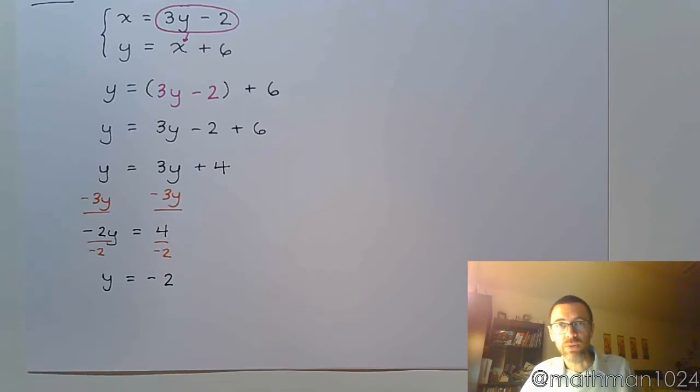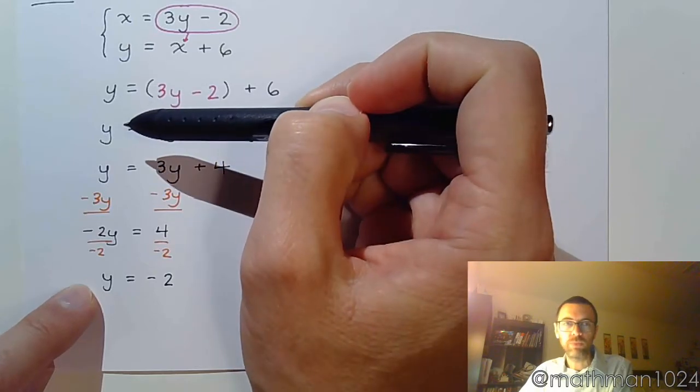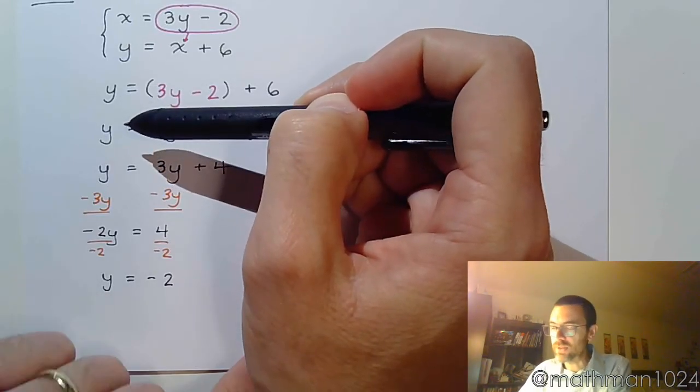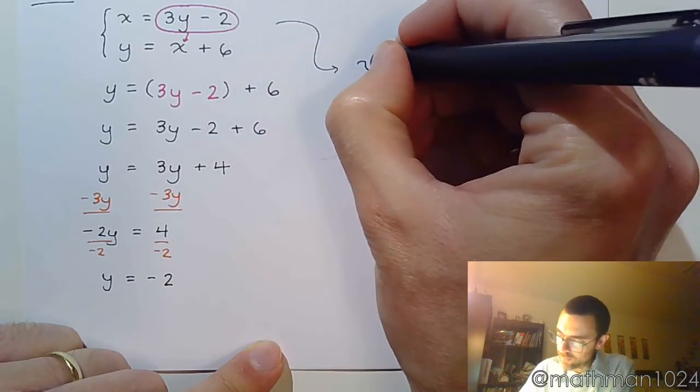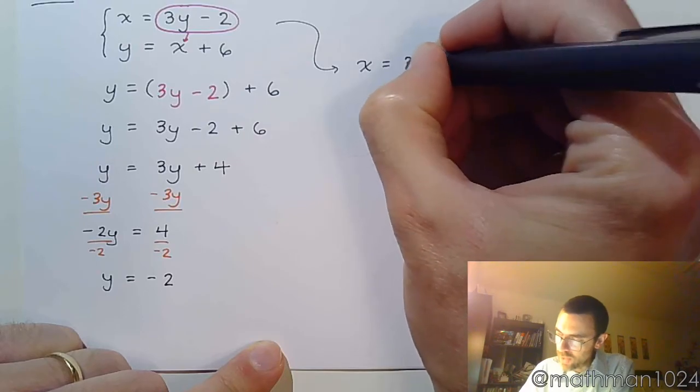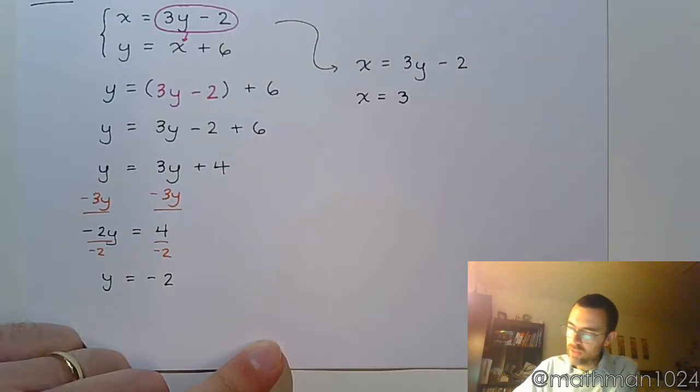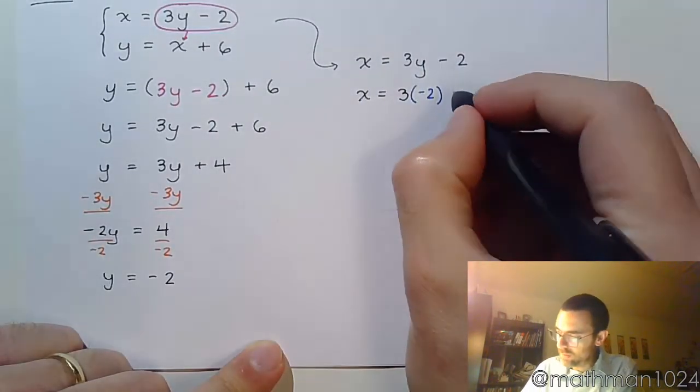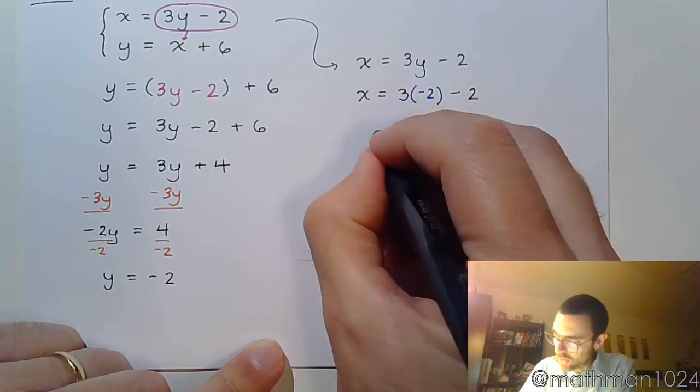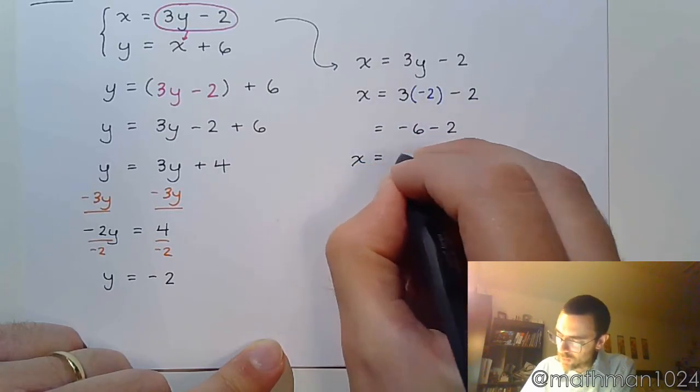Now that I know what Y equals, I just have to plug that into one of the original equations. Now, be smart about this. I could plug Y equals negative 2 in here. That's going to be a bit more work, because I still have to solve for X. But here, X is already by itself. So this is the one that I'm going to use. X equals 3Y minus 2. So X equals 3. We're replacing Y with negative 2. So that's negative 6 minus 2, which means X equals negative 8.